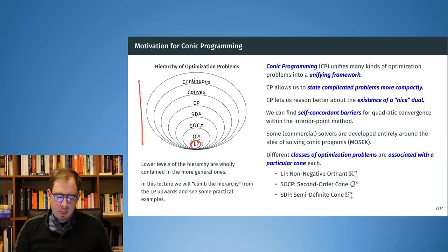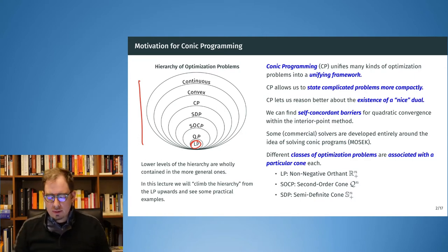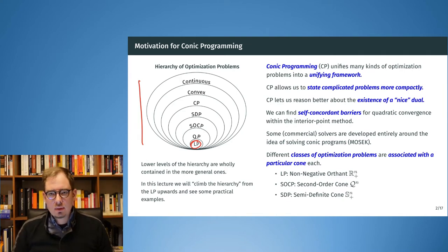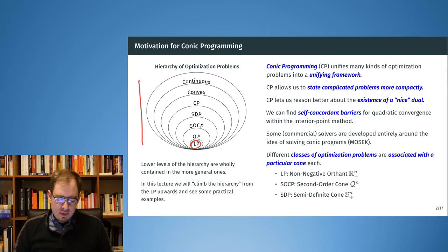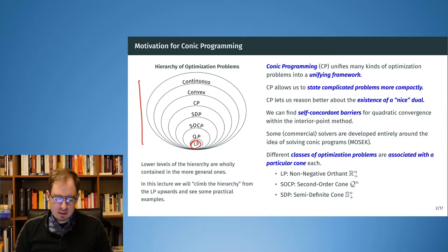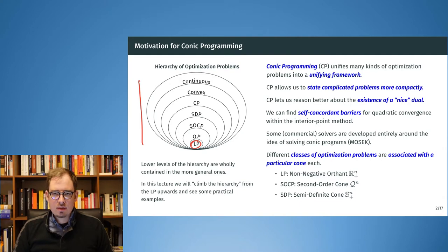Conic programming allows us to state rather big and involved optimization problems more compactly, and in that compact form we can define algorithms that take it as input. Furthermore, conic programming lets us think about the dual, and in some cases these cones allow for nice closed-form duality results. It also gives us good barriers to use in the interior point method.